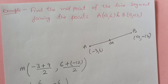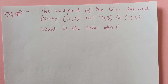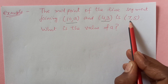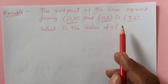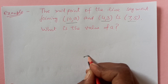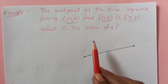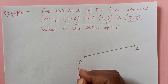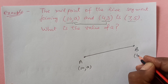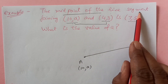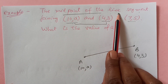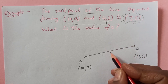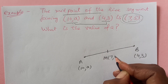Let us take another example. The midpoint of the line segment joining (10, a) and (4, 3) is (7, 5). What is the value of a? The endpoints of the line are (10, a) and (4, 3), and the midpoint is given as (7, 5).